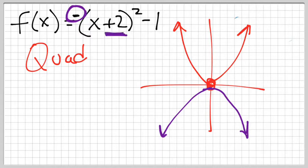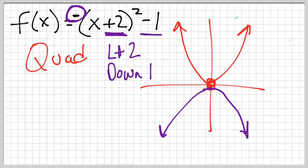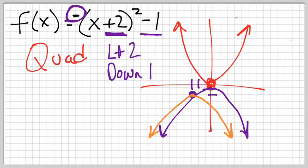Now looking at my purple function, I follow the changes. Since the change is with x, that's a horizontal shift — I go to the left 2. Then the minus 1 means I go down 1. So left 2, down 1 — my new function is going to be here on the orange graph. So: graph the parent function, recognize the negative and flip the whole graph over, then apply the shift as necessary.